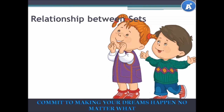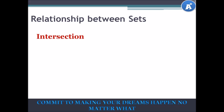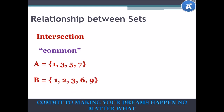Can you tell me what these two friends have in common? They are both wearing red shoes. They both have purple and orange in their outfits. And they both have brown eyes — so they have three things in common. In set theory, we call that an intersection. Intersection means what's in common. If set A = {1, 3, 5, 7} and set B = {1, 2, 3, 6, 9}, then what's common between A and B is 1 and 3. So A ∩ B = {1, 3}.